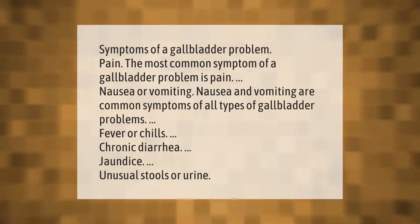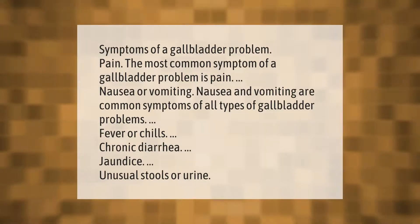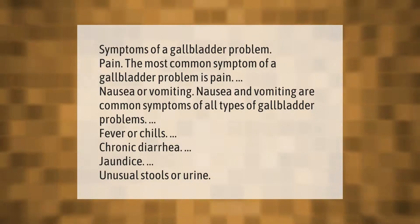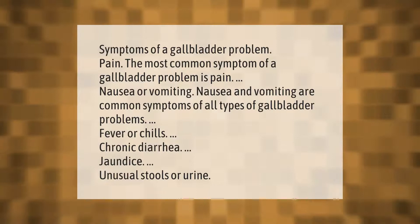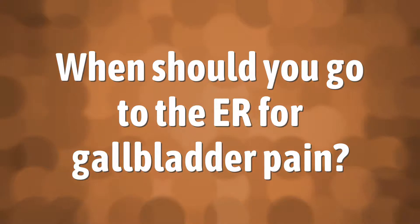Symptoms of a gallbladder problem include: pain — the most common symptom of a gallbladder problem — as well as nausea or vomiting, which are common symptoms of all types of gallbladder problems, fever or chills, chronic diarrhea, jaundice, and unusual stools or urine.